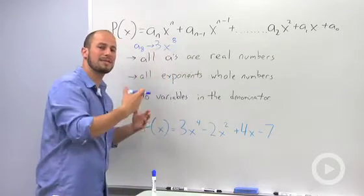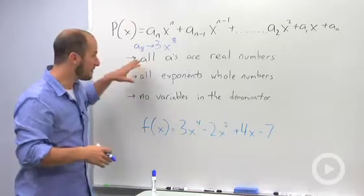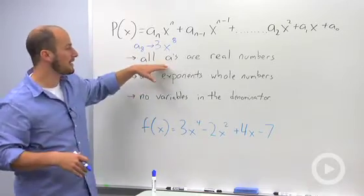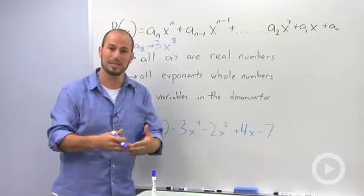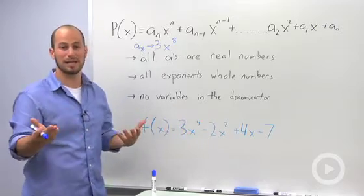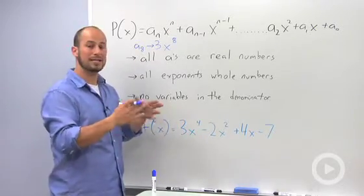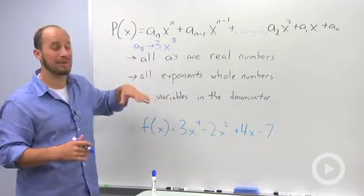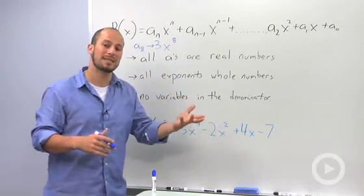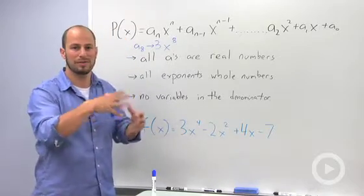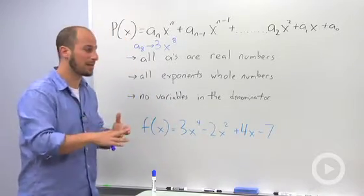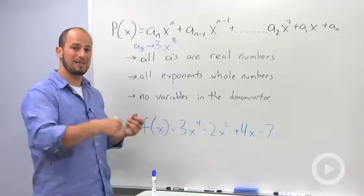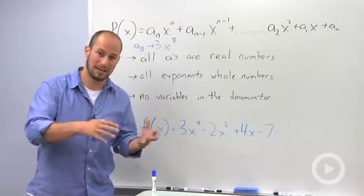Now there's some conditions in what actually makes a polynomial, and I have them written right here. First off, all the a's have to be real numbers. Basically they have to be numbers that we could put on a number line. They could be fractions, it doesn't really matter as long as they are on the number line, they exist. All the exponents have to be whole numbers. So what that means is 1, 2, 3, 4, 5, so on and so forth. Even 0 is okay, but they can't be negative, they can't be fractions, anything like that.